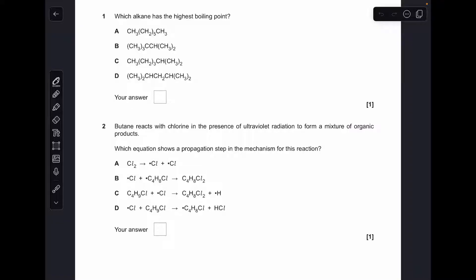Okay, so we'll make a start. All of these alkanes have the same molecular formula, they're all C7H16, so it's going to be down to branching or lack of branching to get the highest boiling point. A is the answer because that is just the straight chain heptane.